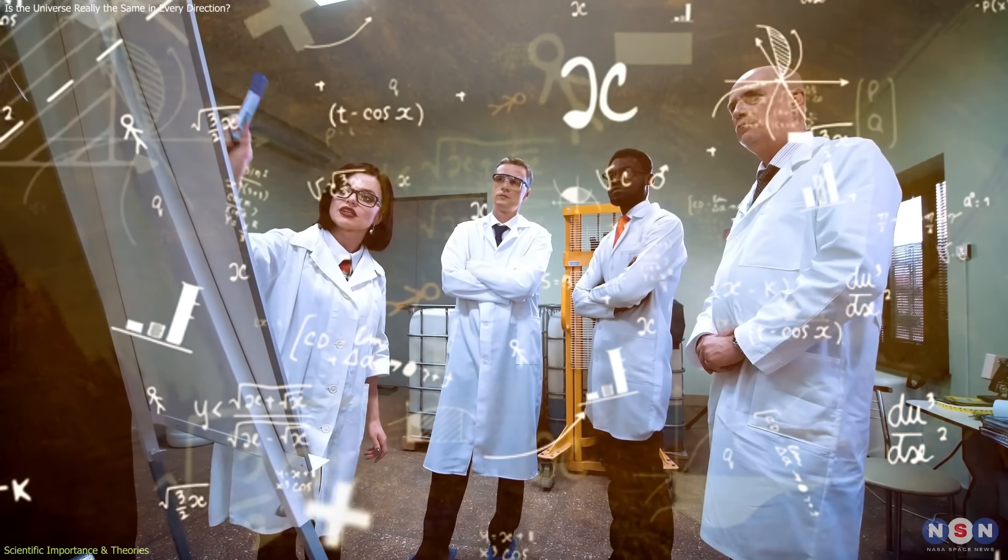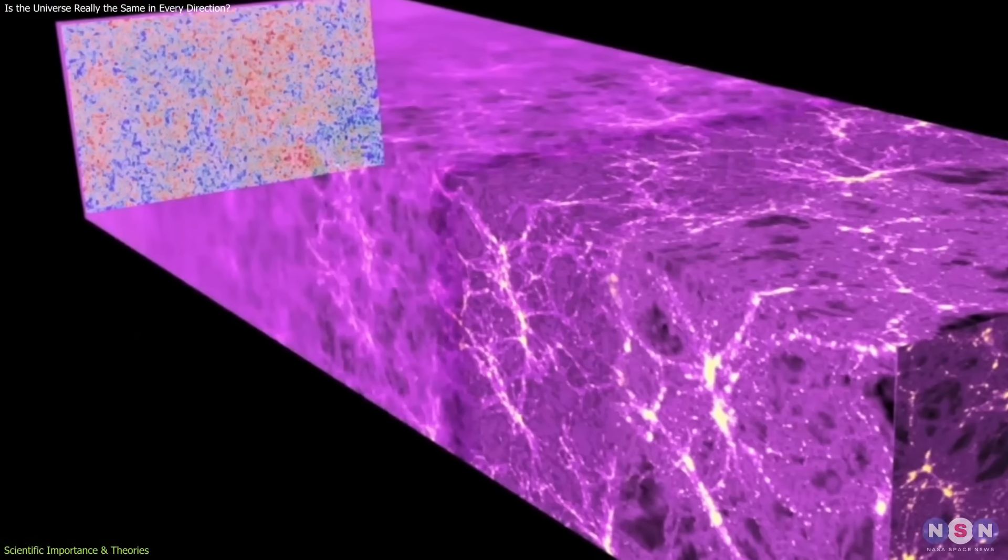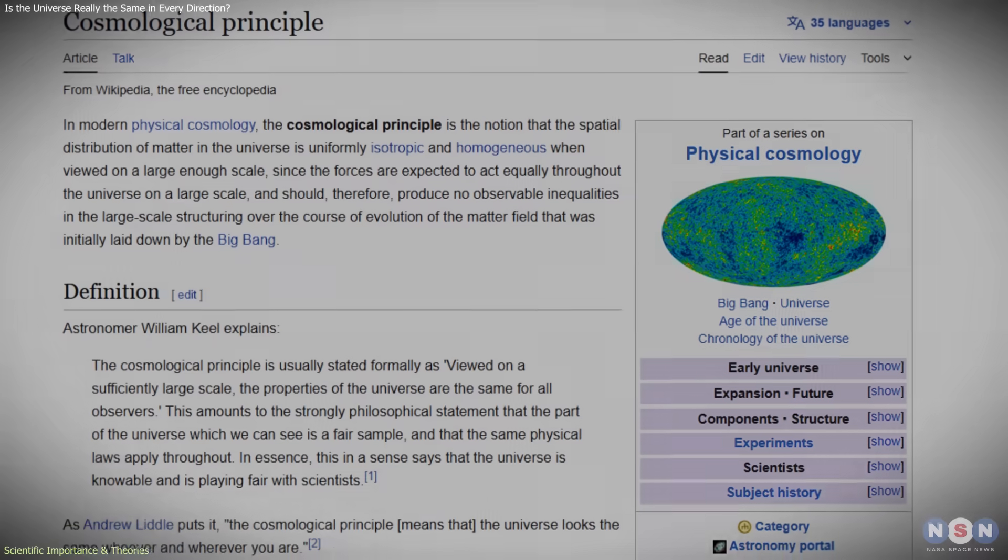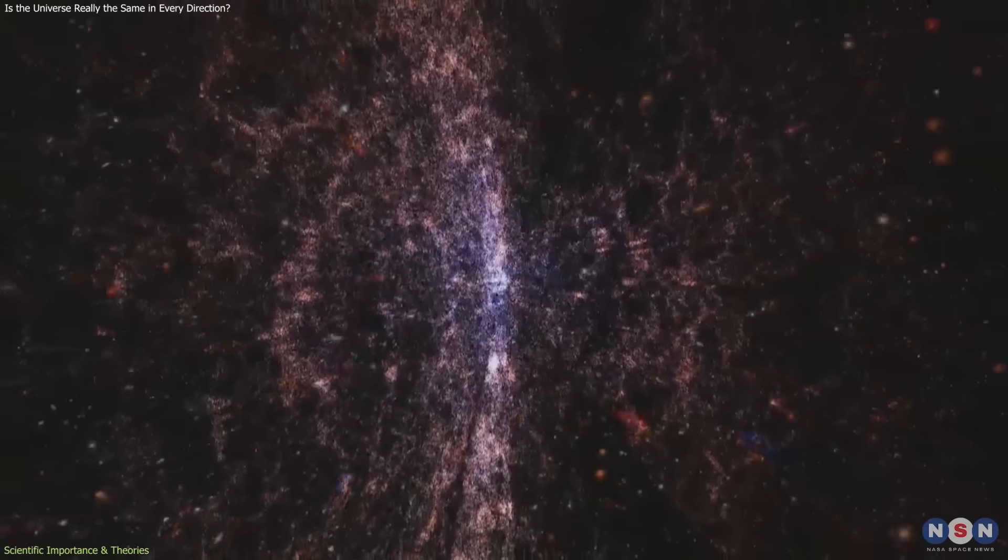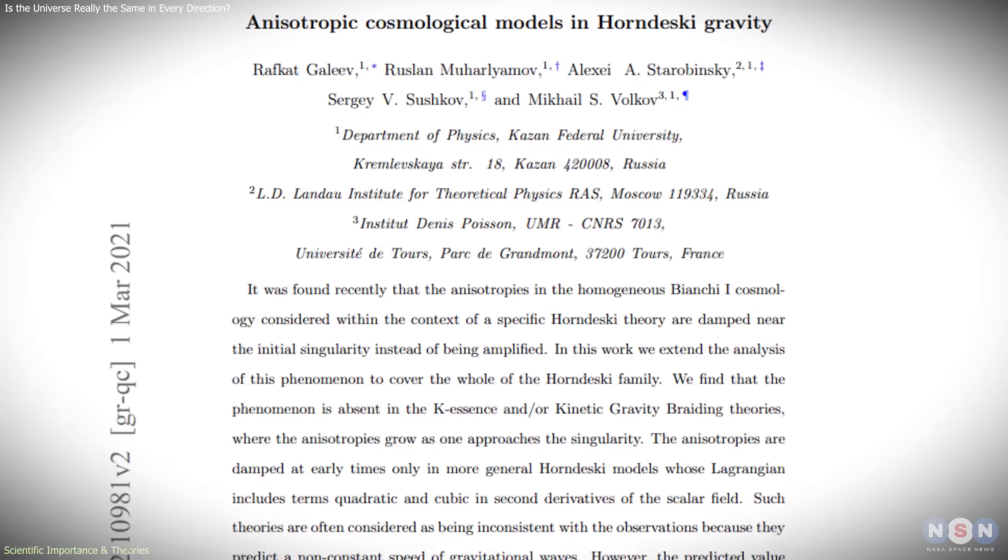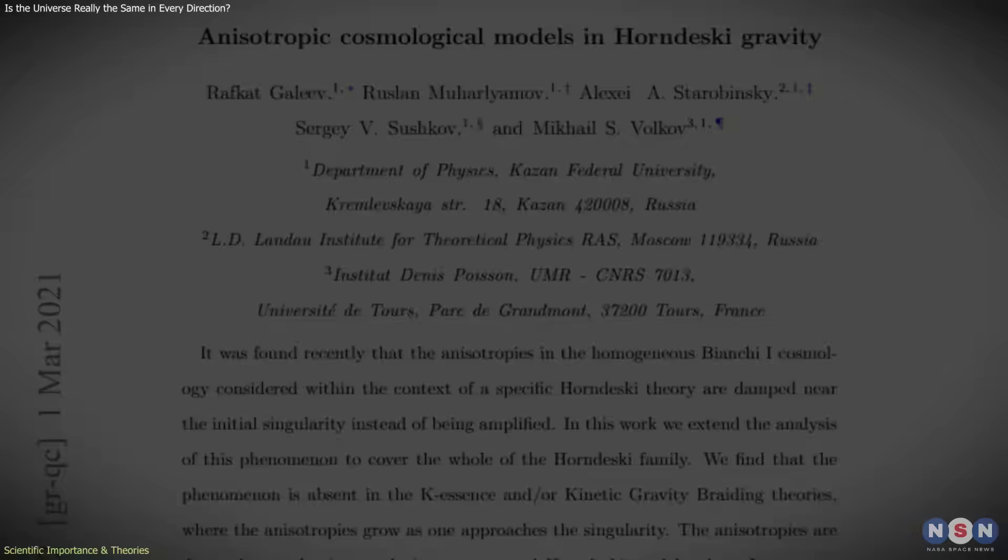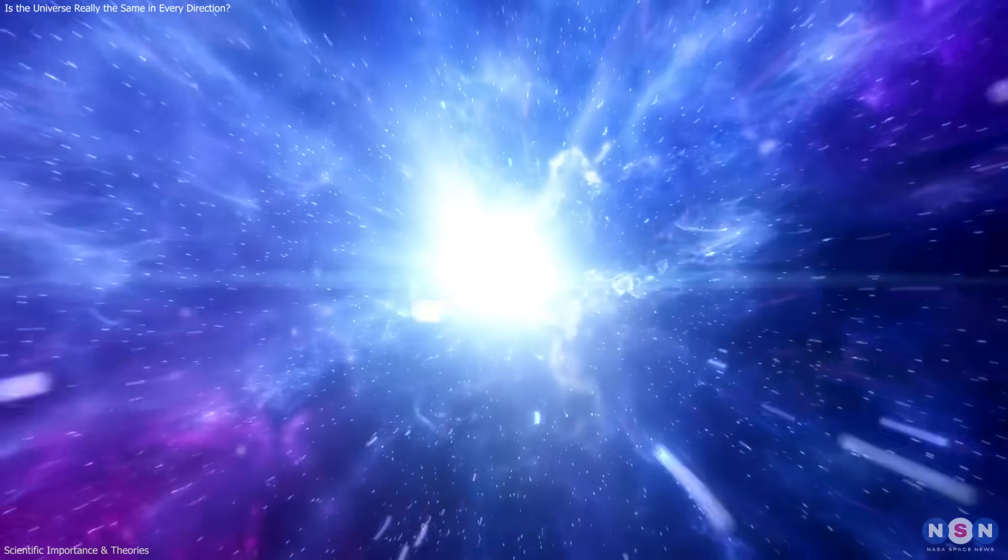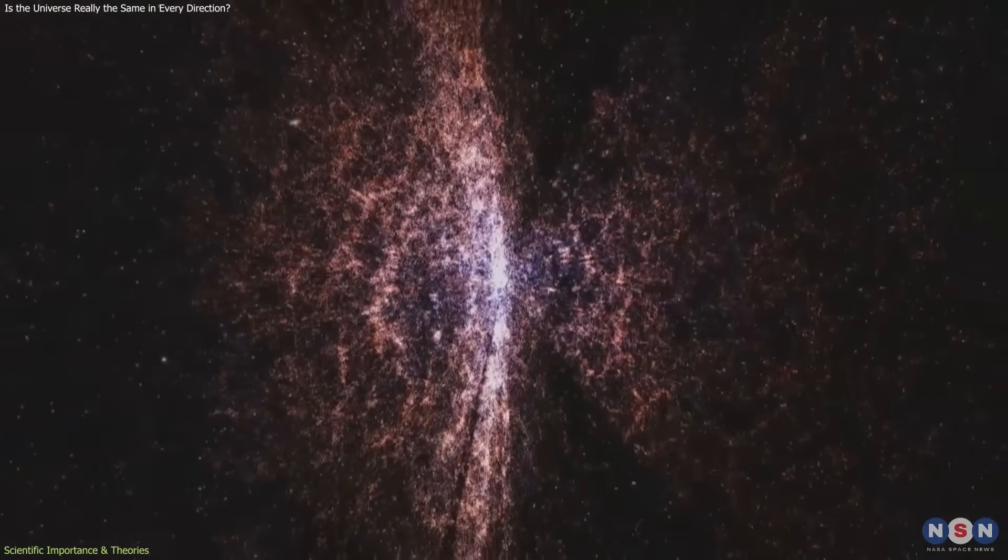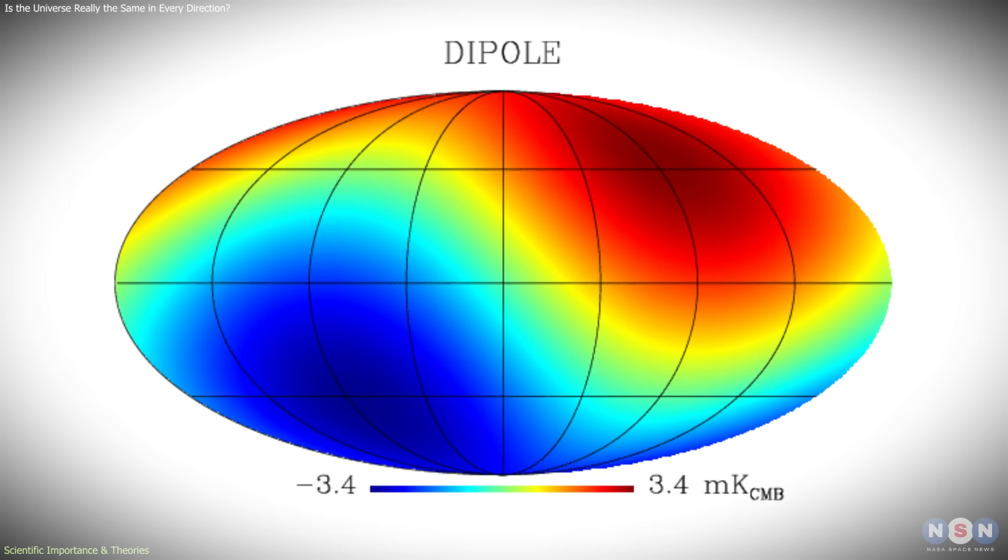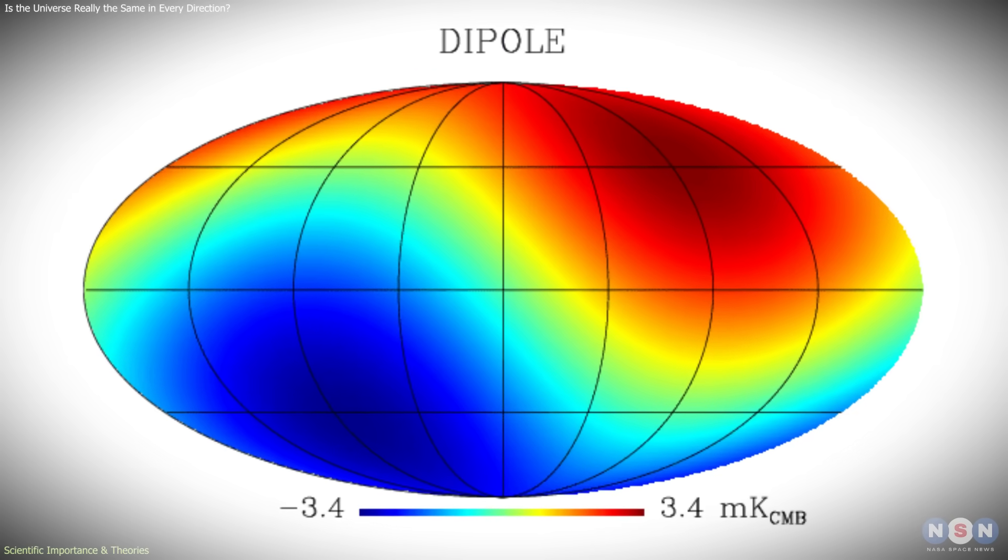Several theoretical possibilities are being actively discussed. One option is that the universe may possess a preferred direction on the largest scales, violating the cosmological principle. This would imply that cosmic structure is not statistically identical in all directions, even when averaged over vast distances. Another possibility involves anisotropic cosmological models that remain consistent with general relativity. These models allow the universe to expand differently along different directions and have traditionally been considered unnecessary because of the apparent uniformity of the CMB. The dipole anomaly has renewed interest in whether such models deserve closer examination.